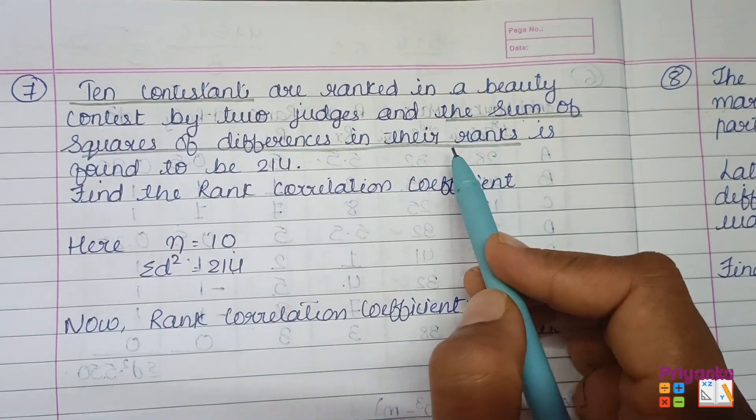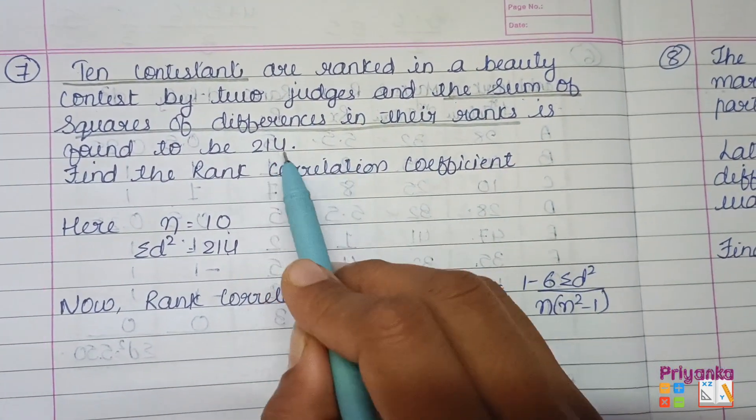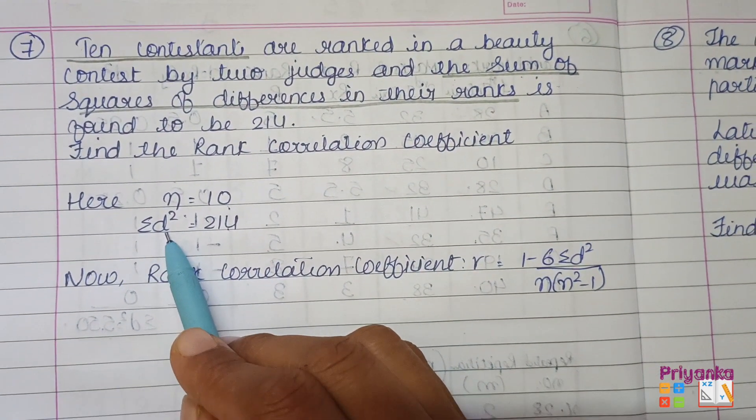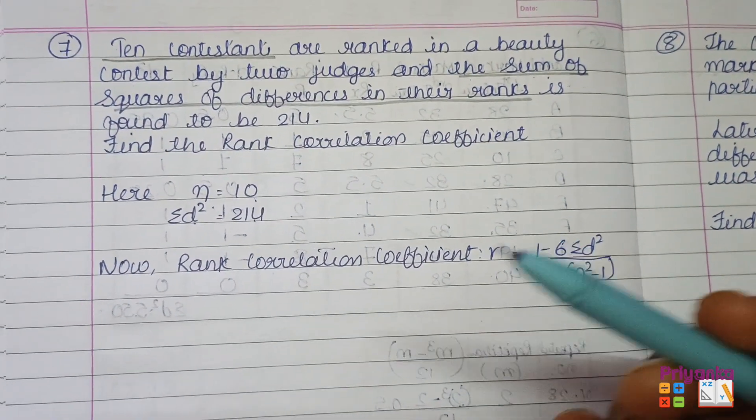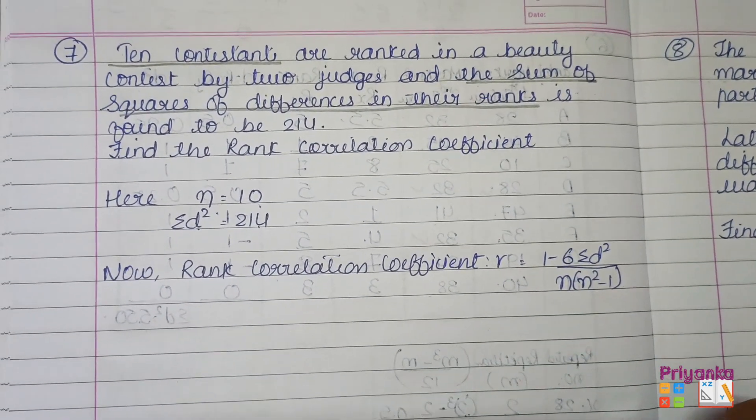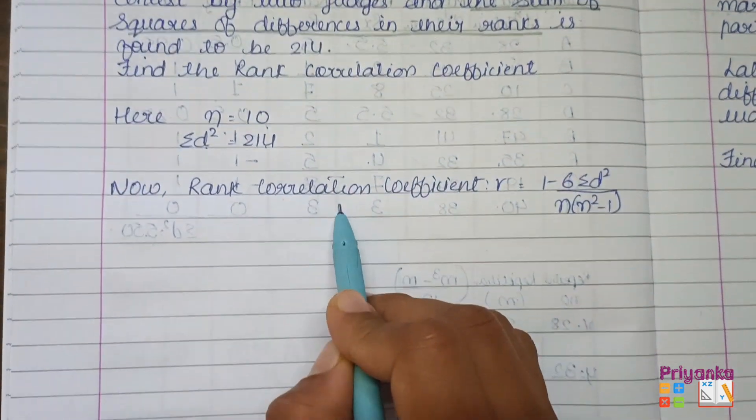Be sure when you are reading the question that you must understand what it means. The sum of square of difference in their rank, that is sigma d square, the difference of two. Just as normally we do d1 and d2 minus to get the rank difference. That is the difference in their rank.